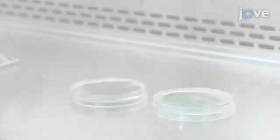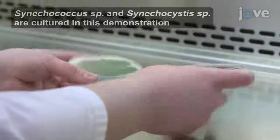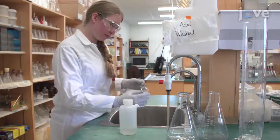To begin, prepare cyanobacterial cultures according to the text protocol. Then rinse one 250-milliliter and two 1-liter heat-resistant Erlenmeyer flasks with 4-molar hydrochloric acid solution, followed by distilled water.